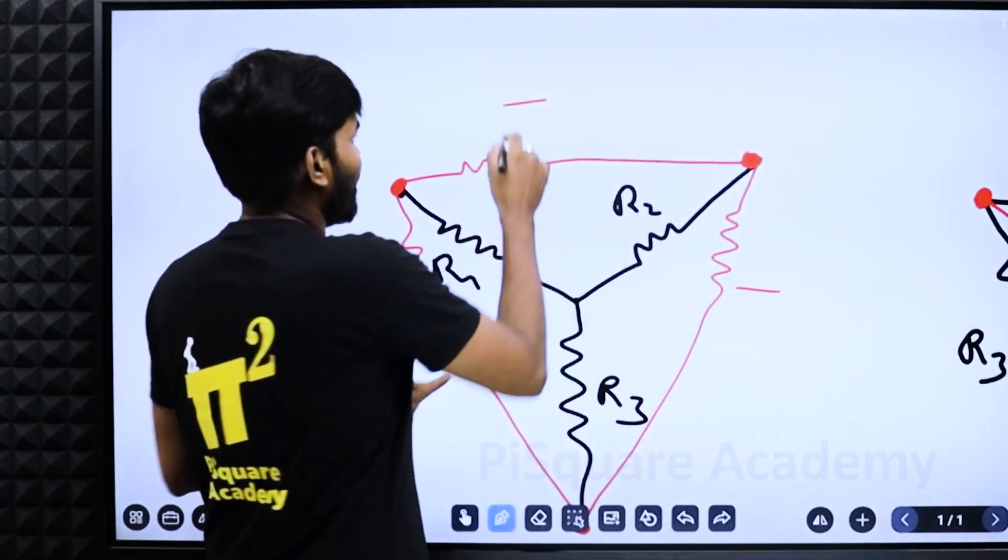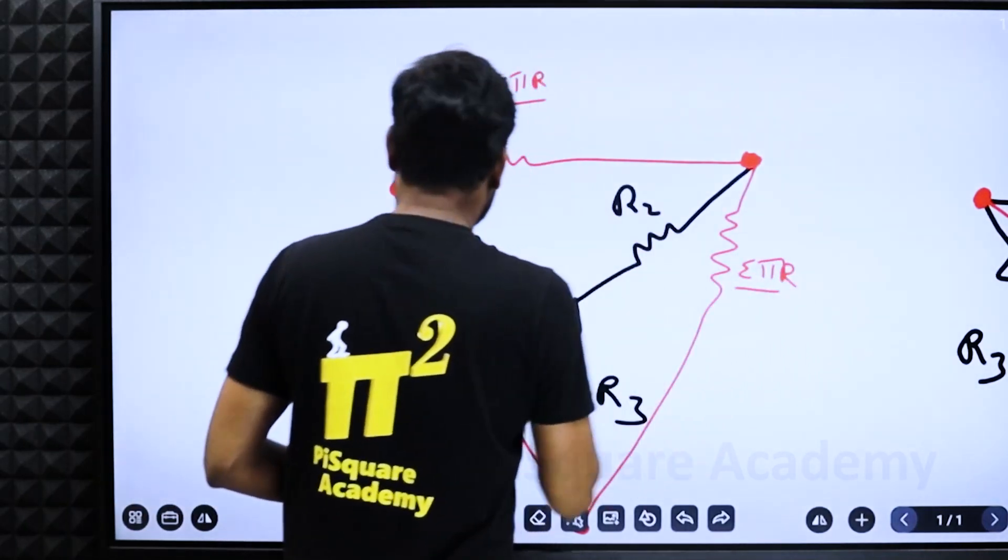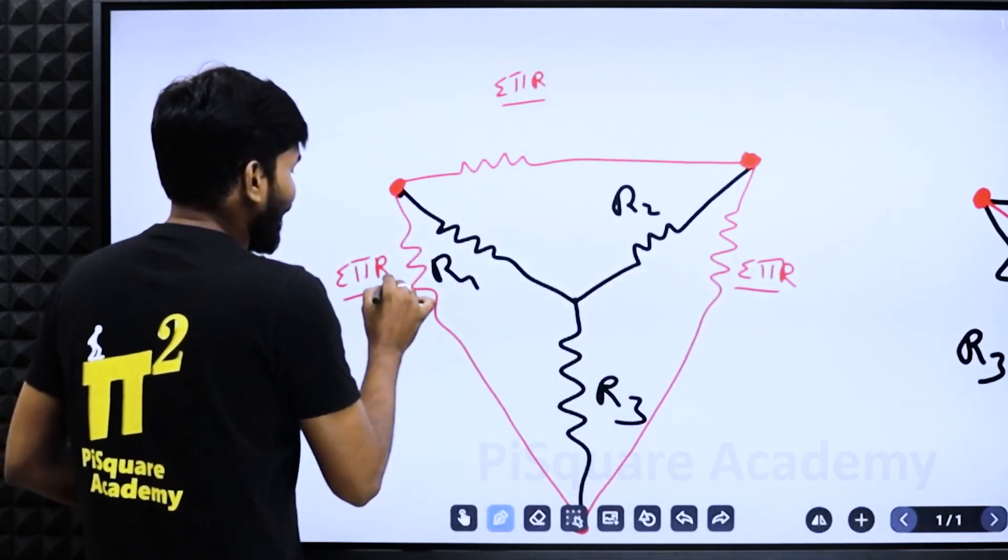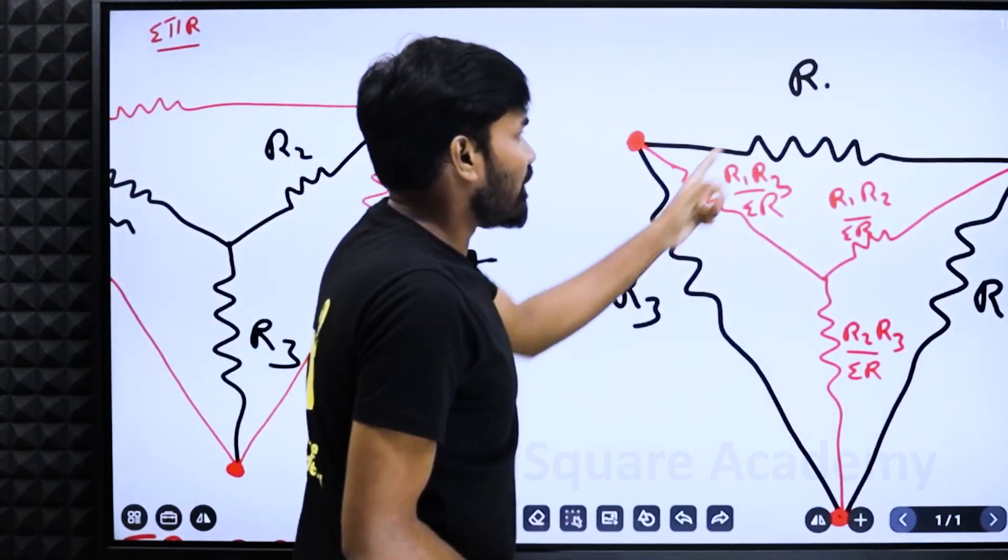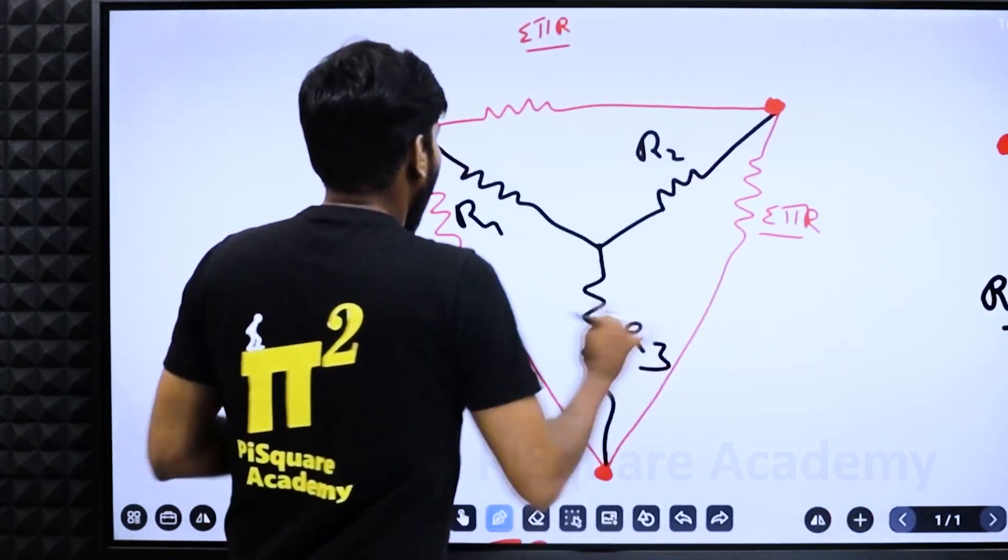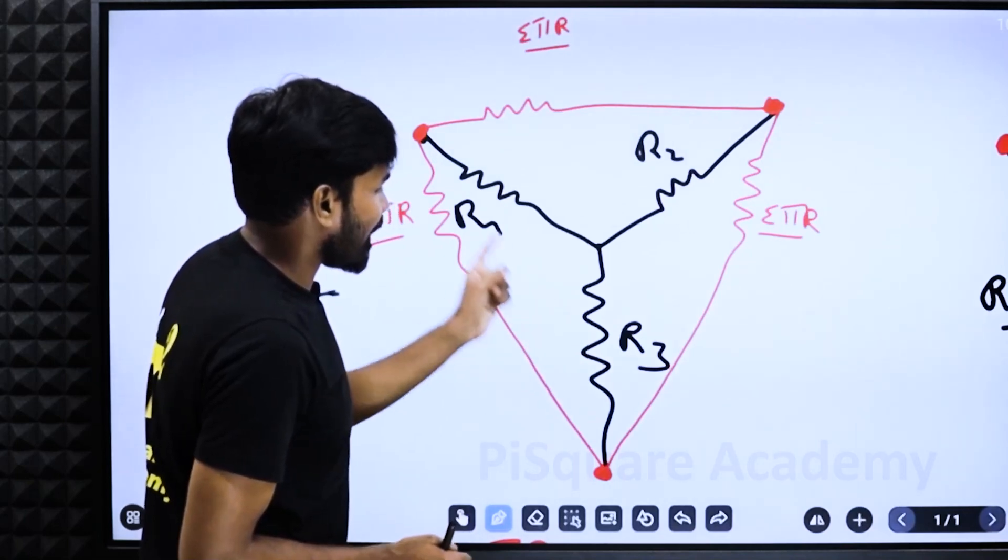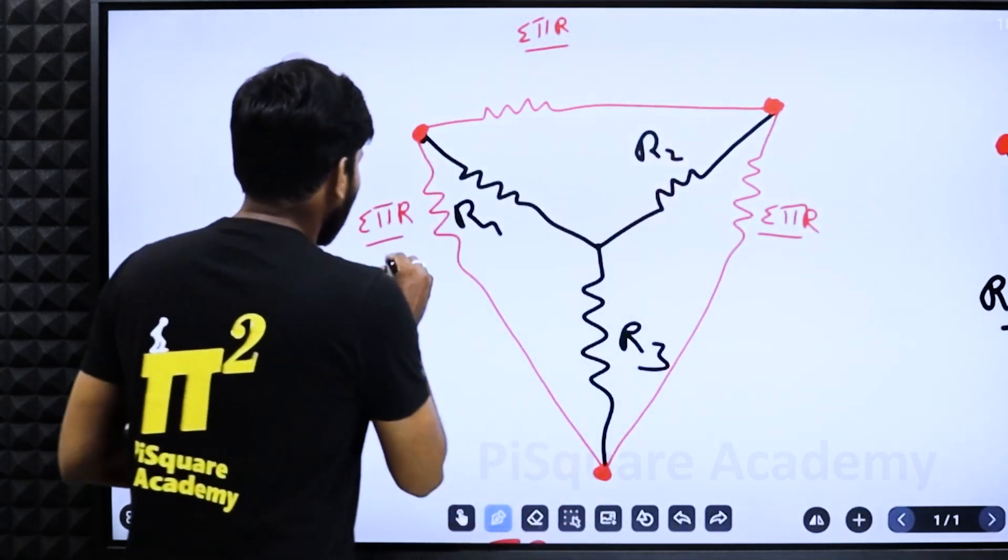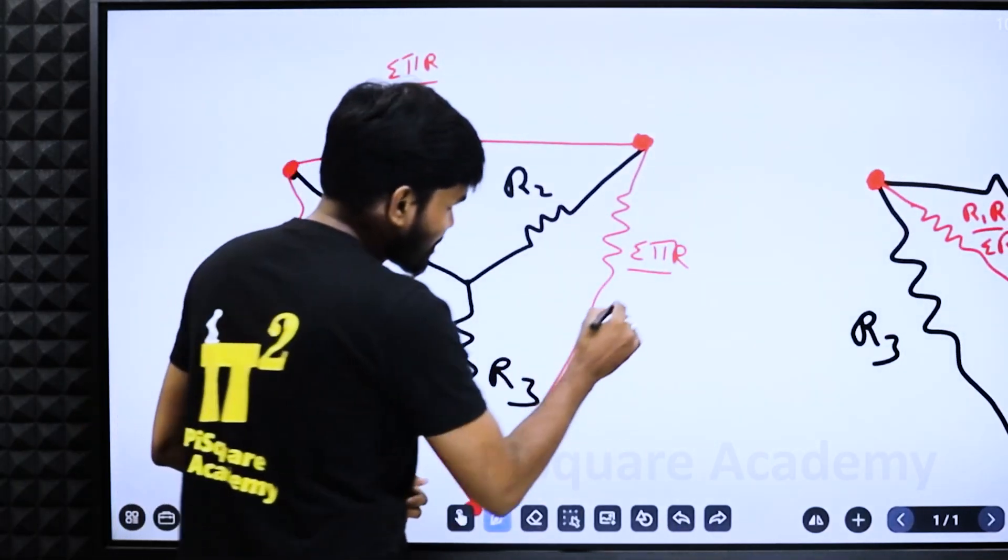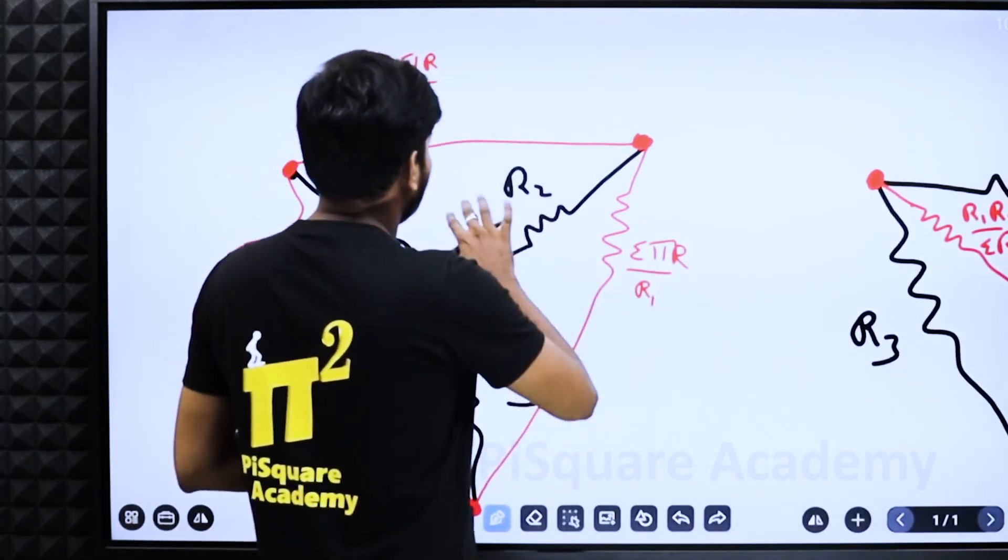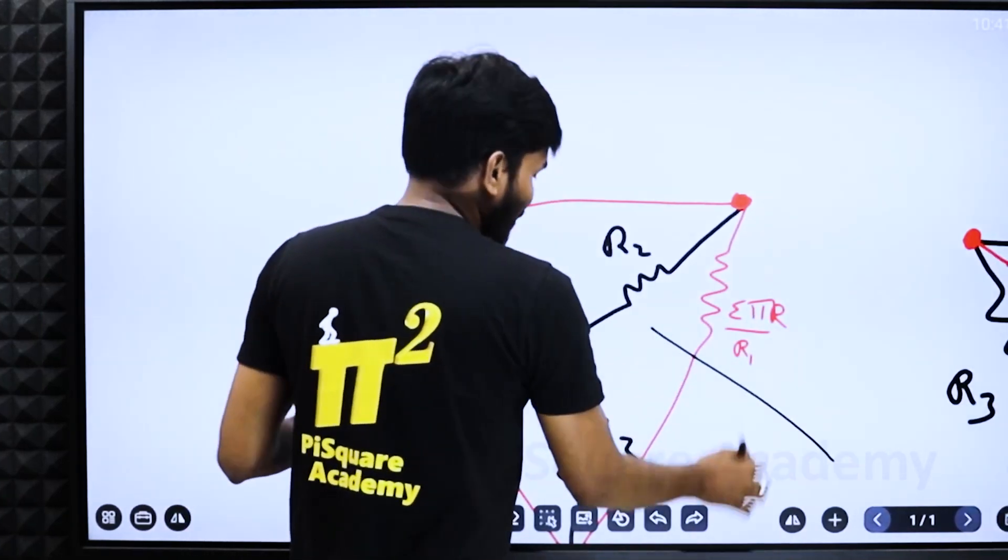Now in the numerator, keep sigma Pi R. Sigma Pi R in the numerator. And in the denominator, in this case we have used touched elements product. Here untouched elements. So for this red one, these two are in touch, R1 R3 in touch. This is not in touch, so keep R2 here. Now we can guess for this, this is not in touch, R1. For this, this is not in touch, R3. Bingo.